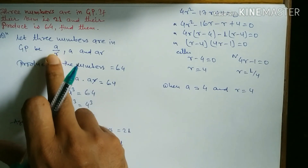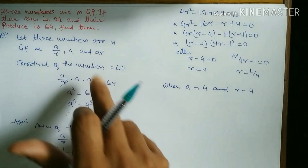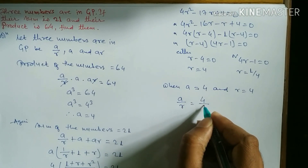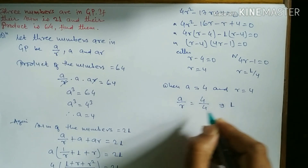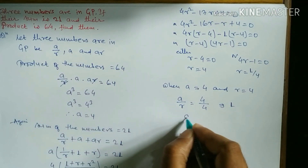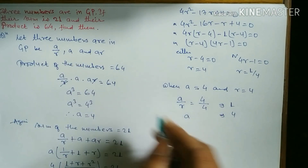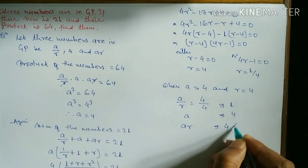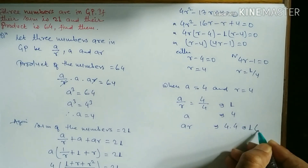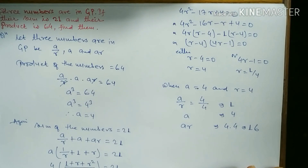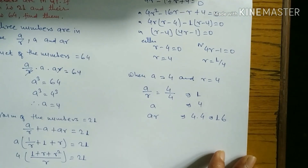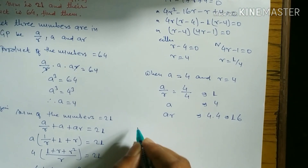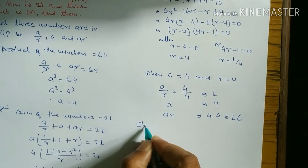When a = 4, r = 4: a/r = 4/4 = 1, a = 4, ar = 4 × 4 = 16. Hence the required numbers are 1, 4, and 16.